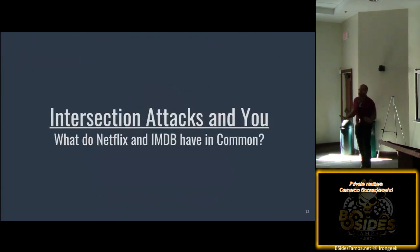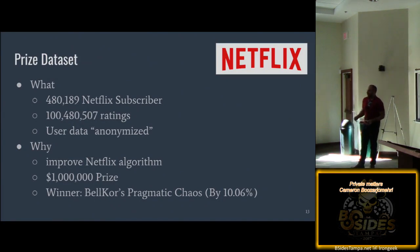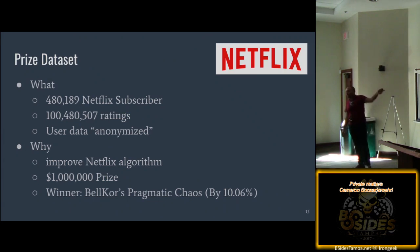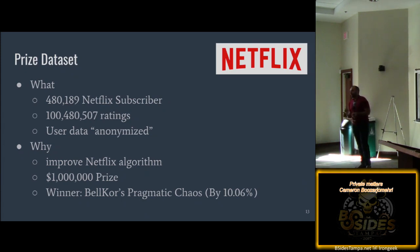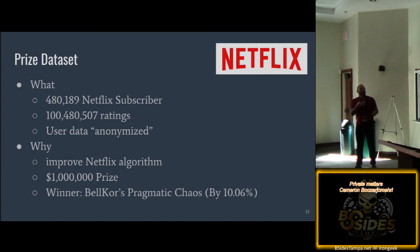Alright, that's all the dry stuff — let's go into the fun stuff. Netflix, 2006: there was a competition to improve the Netflix rating algorithm. They released an anonymized dataset — 500,000 individuals' information, over 100 million movie ratings, when they were rated, and a randomized ID to link ratings across the set. Bellcourt's 'Pragmatic Chaos' team won by improving the algorithm by 10.06% — ending up at about 86.5%. They won the million-dollar prize.